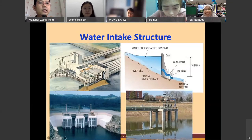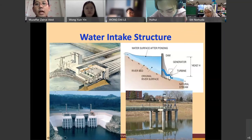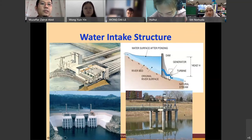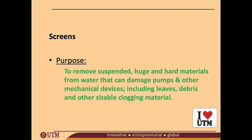This is what we mean by a water intake structure. Imagine if you have a very strong current — this structure may collapse. That's why you have to have a very calm river. Now we're going to learn about screens.